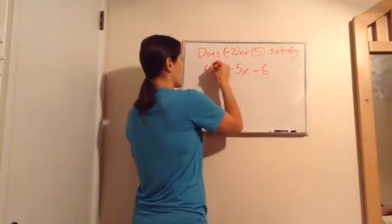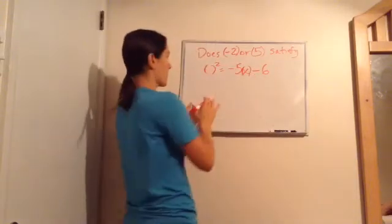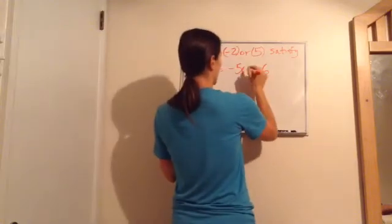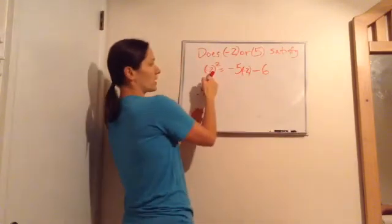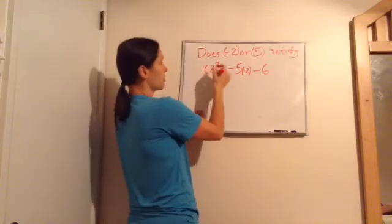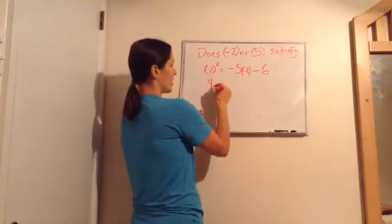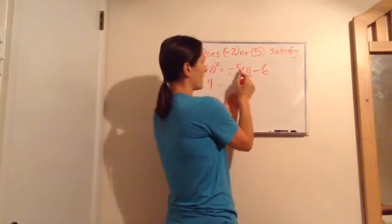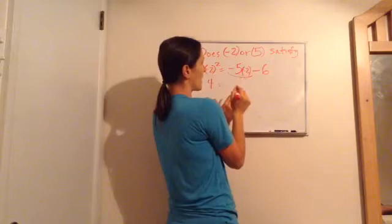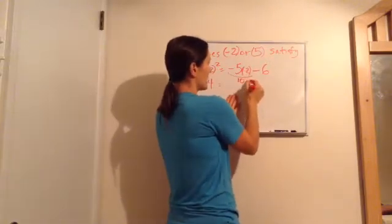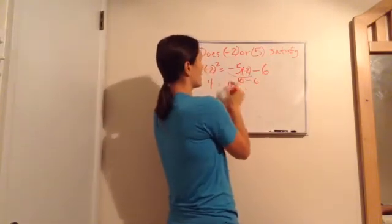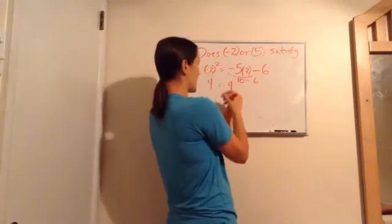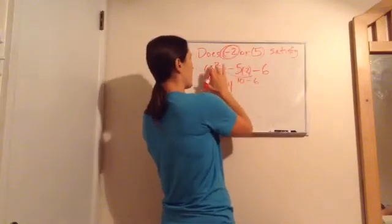So let's put negative two where all of our – actually, I'm going to put parentheses. Remember how we do that? Because that's important. So let's put a negative two here. And then a negative two here. So this would be negative two times negative two since it's squared, which would give us positive four. Now let's do this problem. Let's do the multiplying first. Negative five times negative two makes positive ten. And ten minus six is four. Does negative two satisfy this equation? Yes. So negative two does.